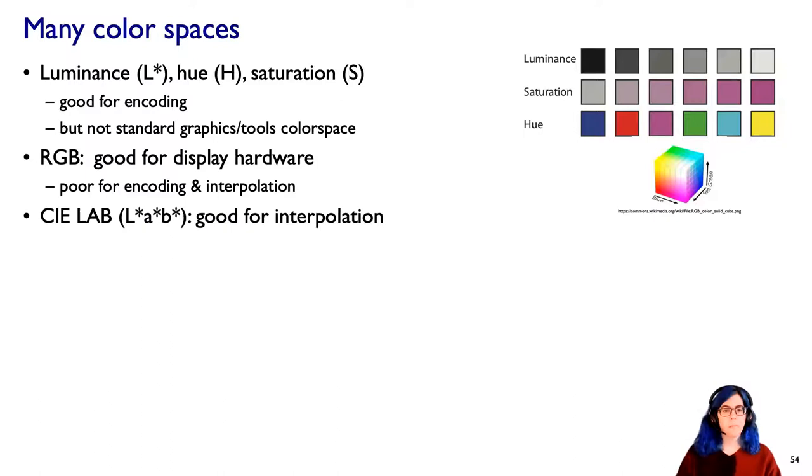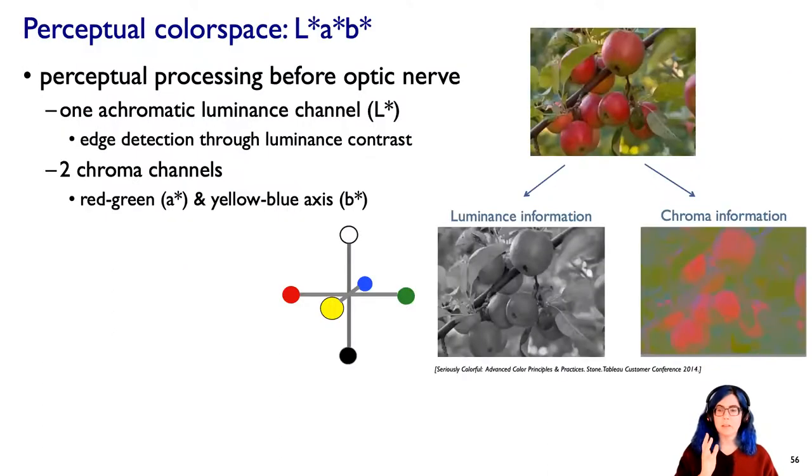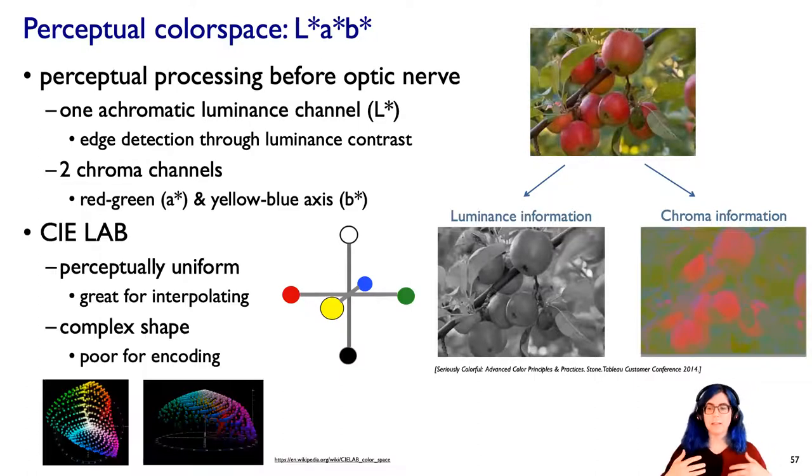There is a color space which is fantastic for interpolation, except it's hard to interpret and not so great for encoding. That space is the space we talked about when we were discussing color deficiency. This perceptual processing space where there's a luminance channel L* and then these two chroma channels: A* is the red-green axis, B* is the yellow-blue axis.